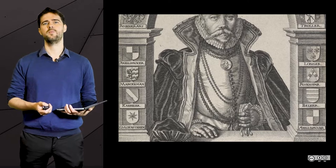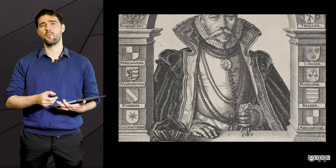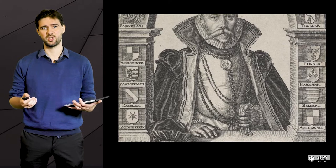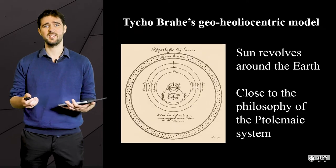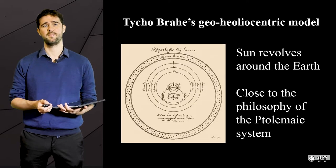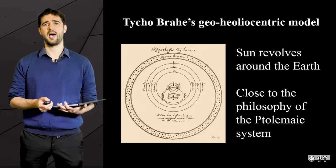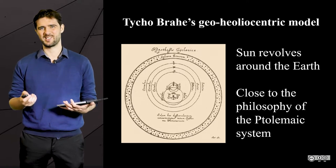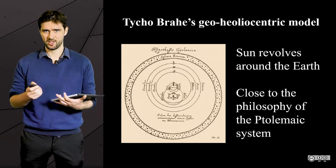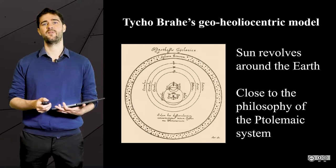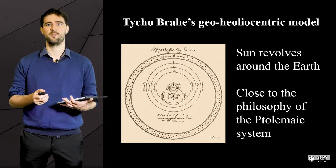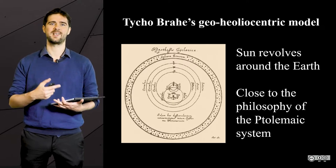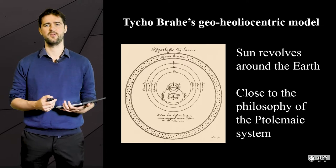This astronomer had collected enormous amounts of data on planets' positions. He had more or less the same data as Copernicus, but the heliocentric system was contradictory with the philosophy of the Ptolemaic system of the time, where Earth was at the center of the universe.